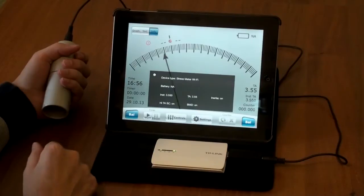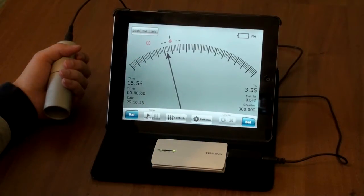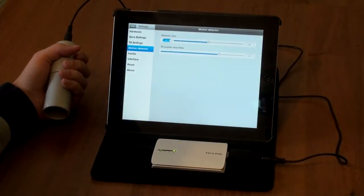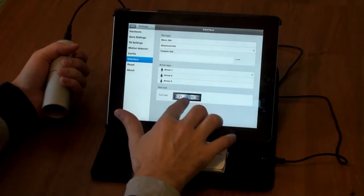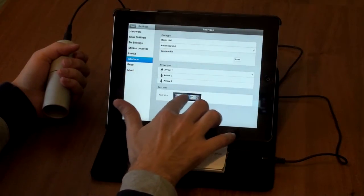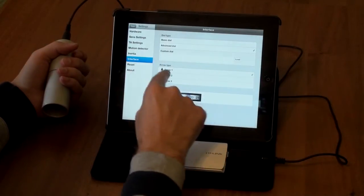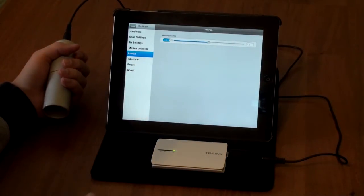Here is info about settings. Now I want to show you special settings of 3dm. Here you can adjust font size. Here you can choose different needle types and different dials. Inertia.